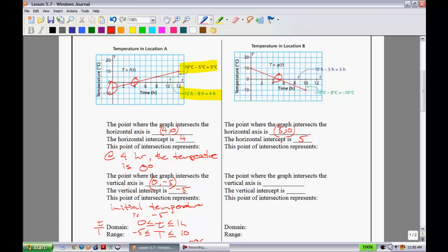And that is at (5, 0). So the horizontal axis is at 5. What does that mean? That means after 5 hours, or at 5 hours, the temperature is zero degrees Celsius.